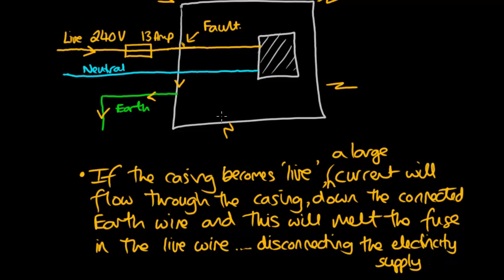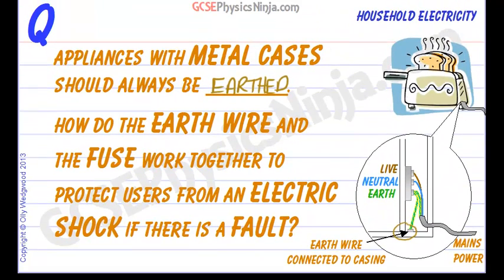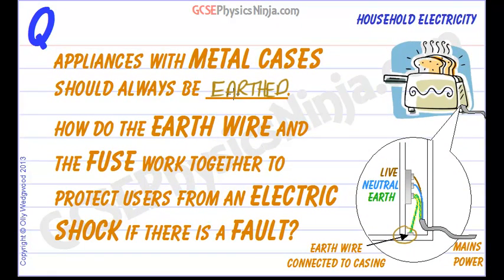So that's how the earth wire works with the fuse to keep metal cased appliances safe. Now, if the appliance doesn't have a metal case, then you don't need an earth wire. If it's a plastic case, then electricity cannot flow through plastic—it's an insulator. So you wouldn't need an earth wire. Every appliance which has a metal case should always be earthed.